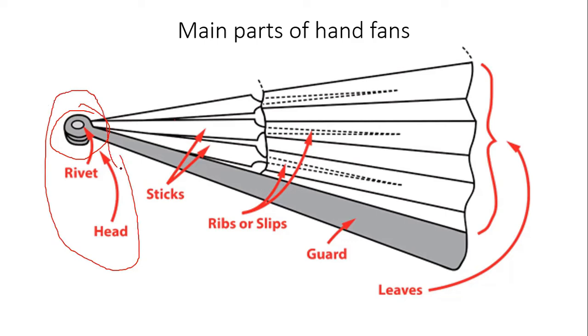Ribs: the upper part of the sticks onto which the leaf is mounted. Pivot pin/rivet: normally made of metal, inserted through the head which holds the sticks together and allows the fan to be opened and closed.